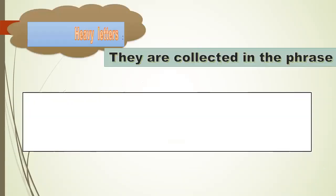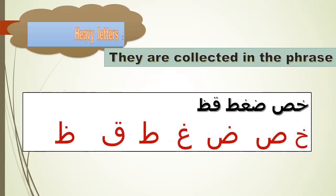First we will study together the heavy letters. They are collected in the phrase: khussah, daghtin, qizh. The letters are: khaa, saad, dad, ghayn, taa, qaf, and za. These letters are heavy.